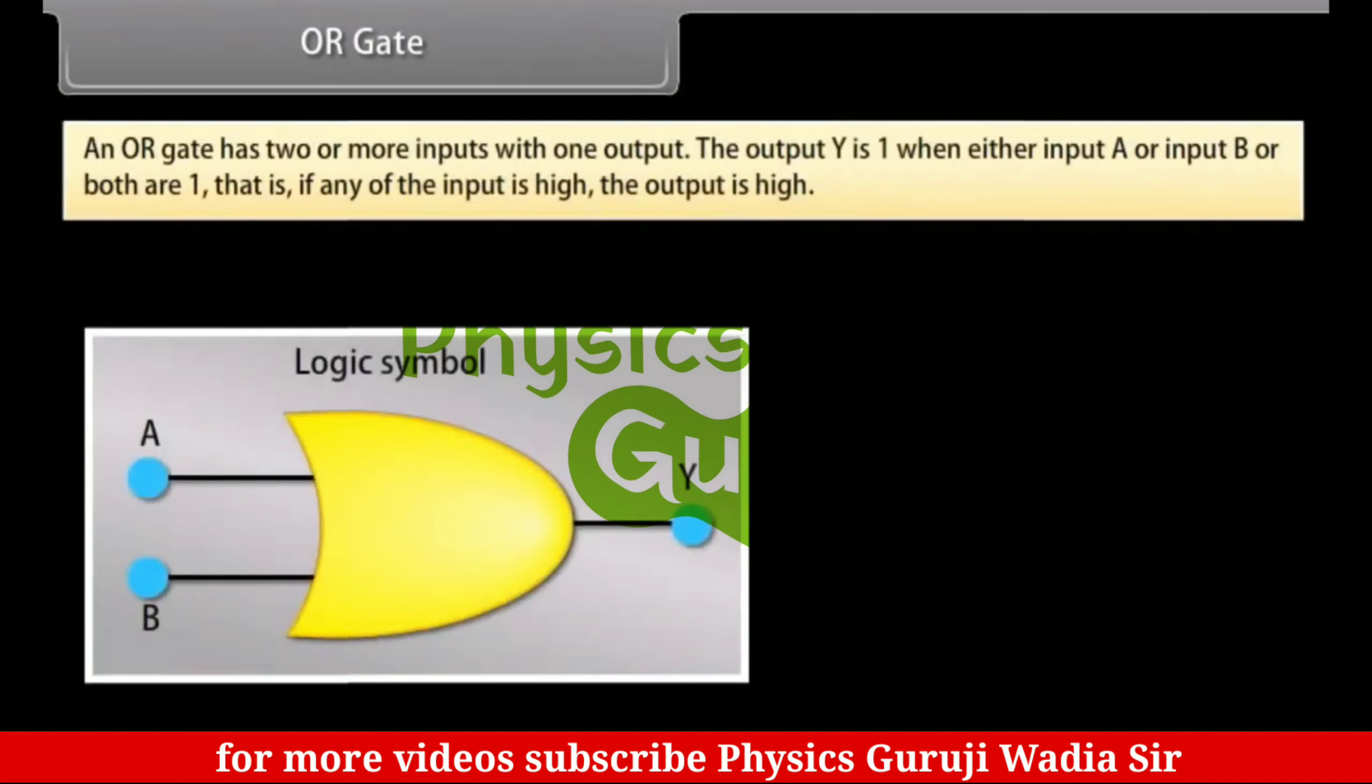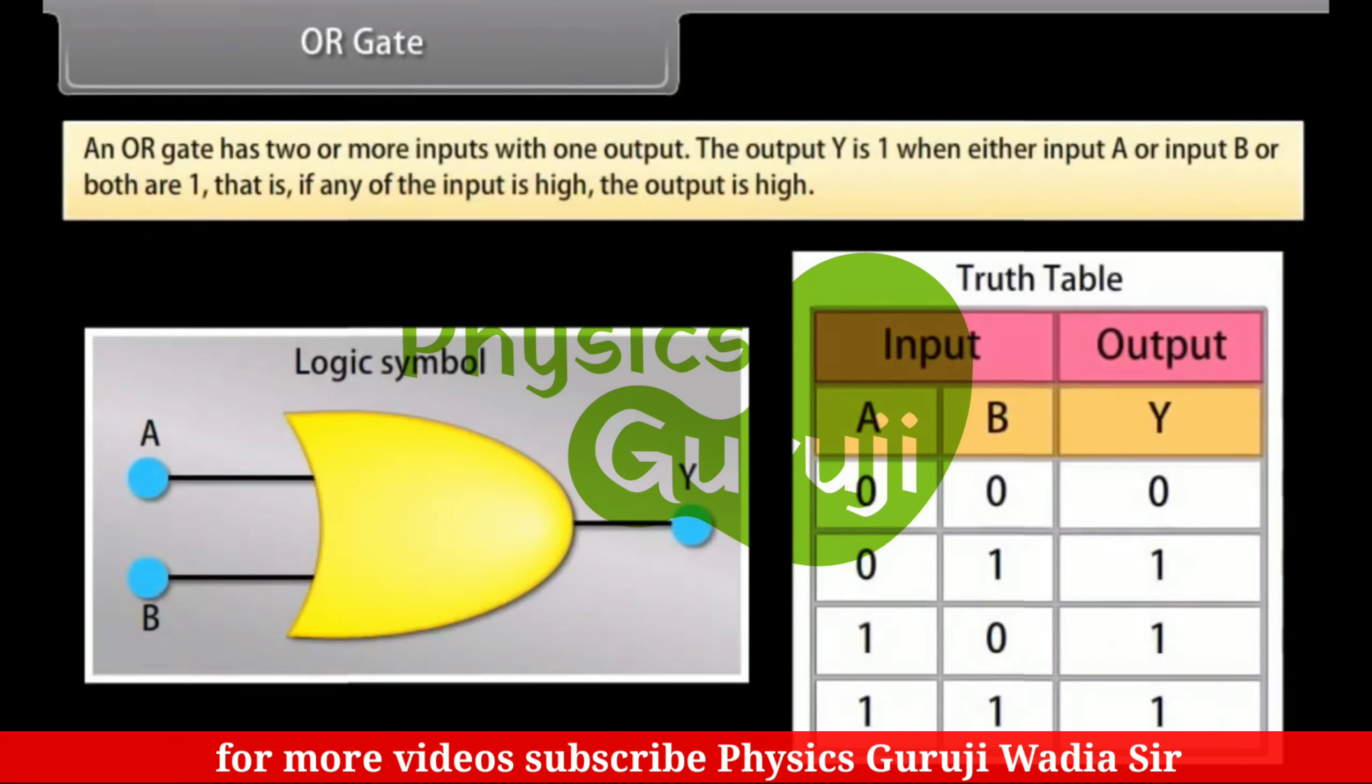OR-Gate: An OR-Gate has two or more inputs with one output. The output Y is one when either input A or input B or both are one. That is, if any of the input is high, the output is high.